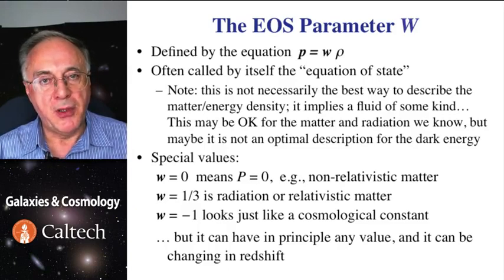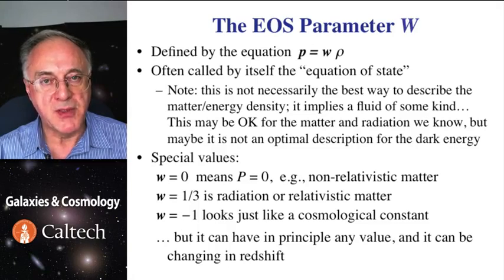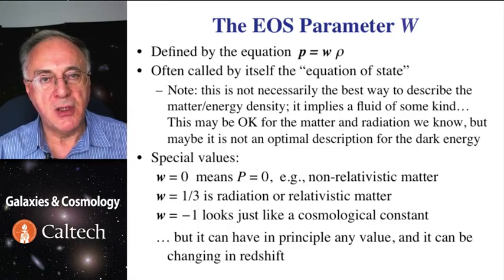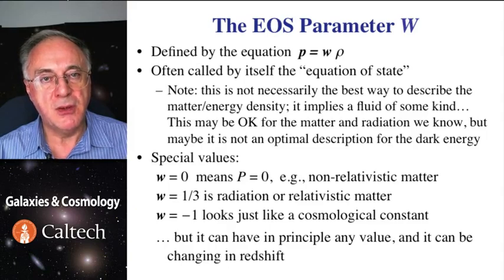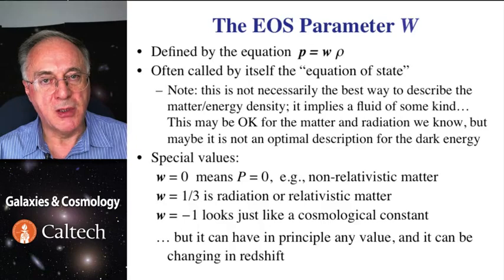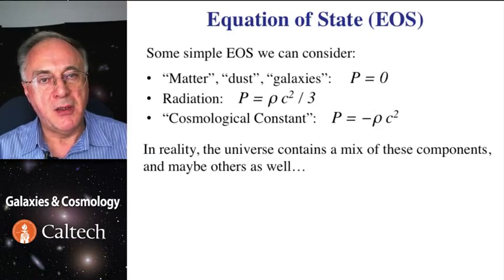W of one-third corresponds to radiation, photons, or relativistic particles of some kind. And W of minus one corresponds to a constant energy density that doesn't change even though the universe does expand, and that is suitable for cosmological constant.